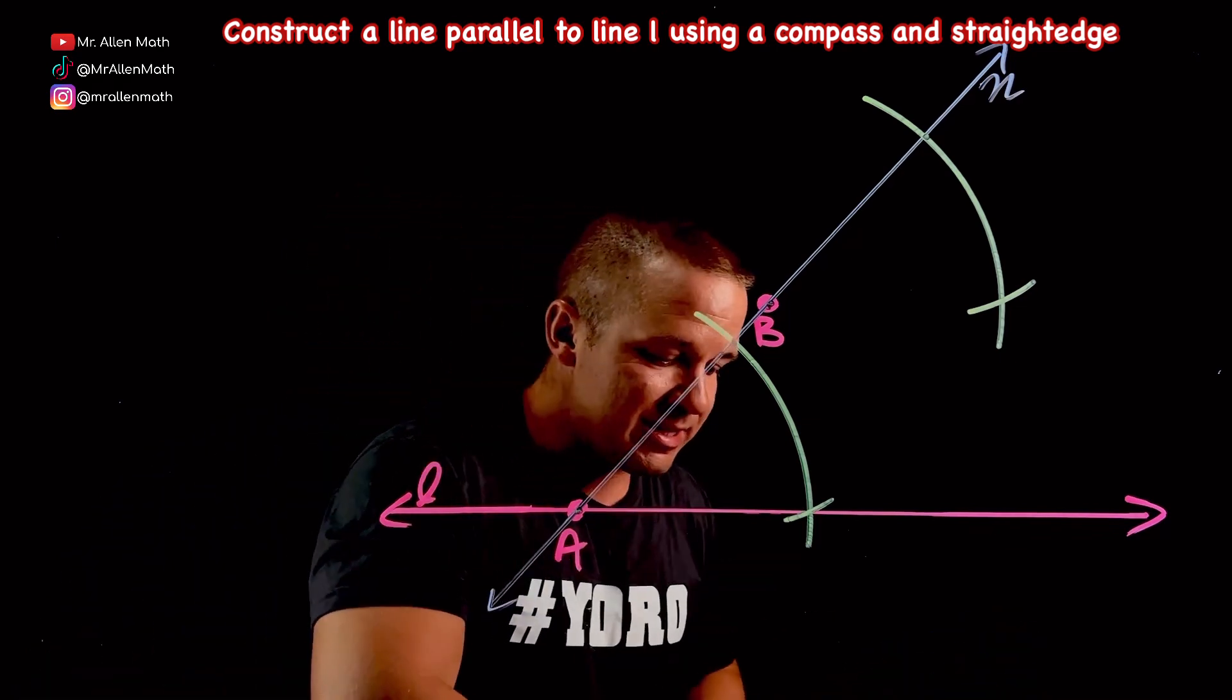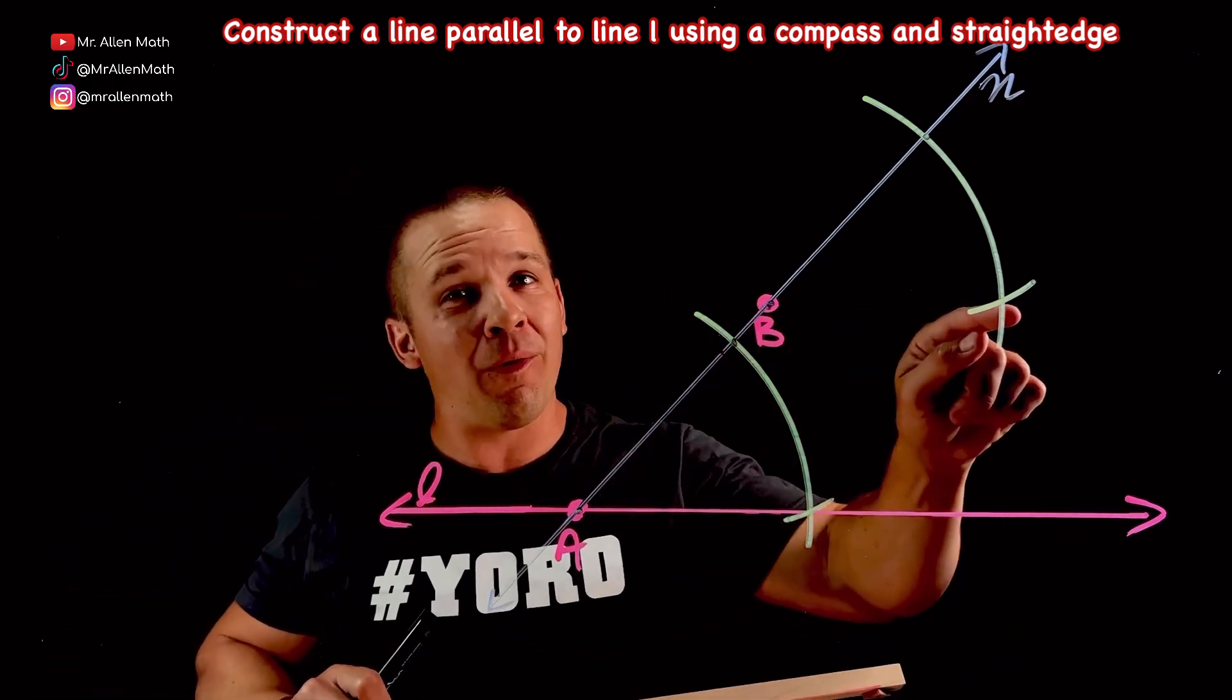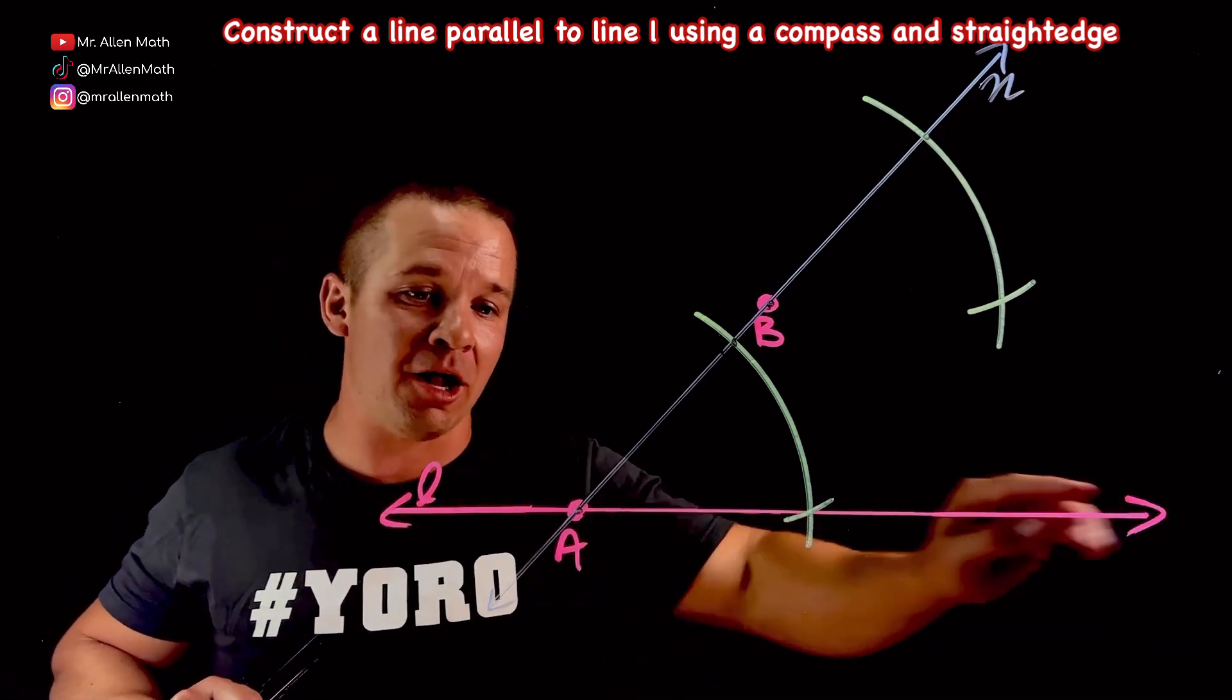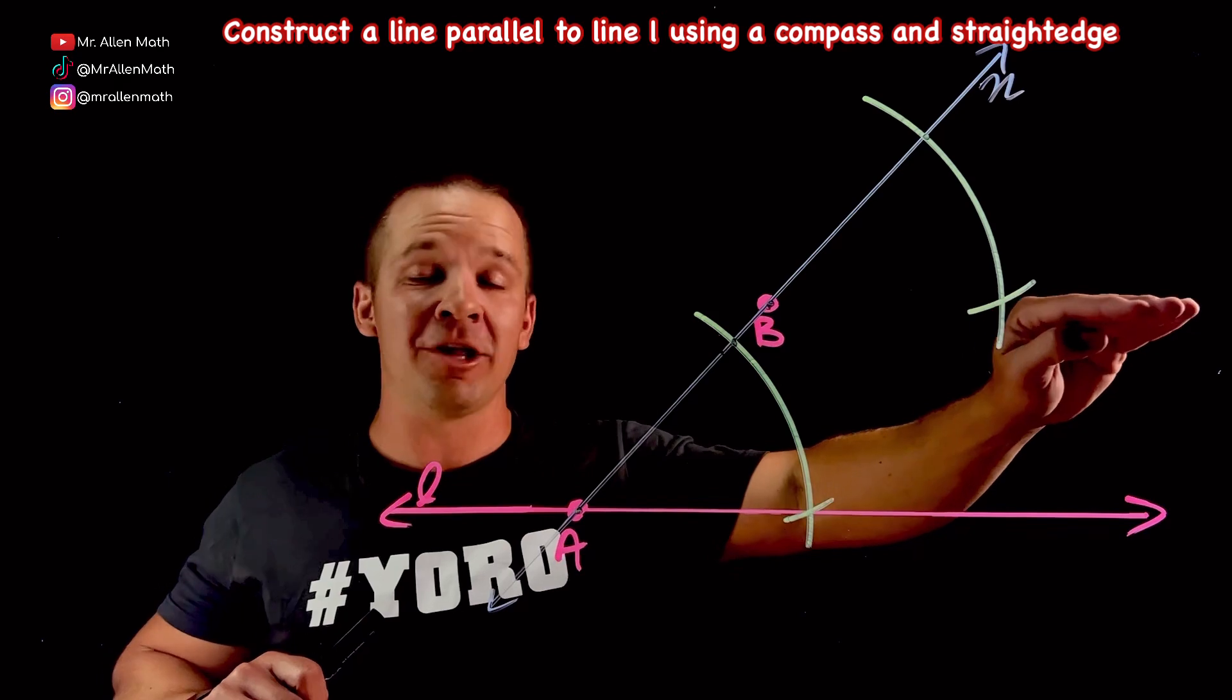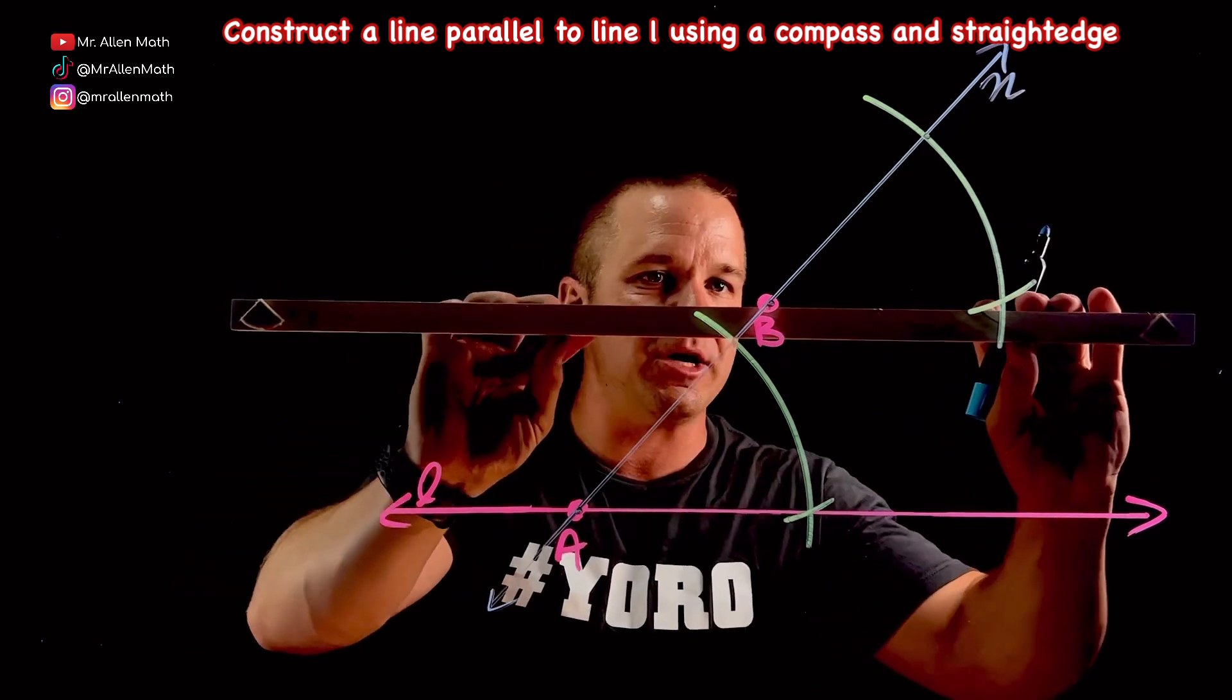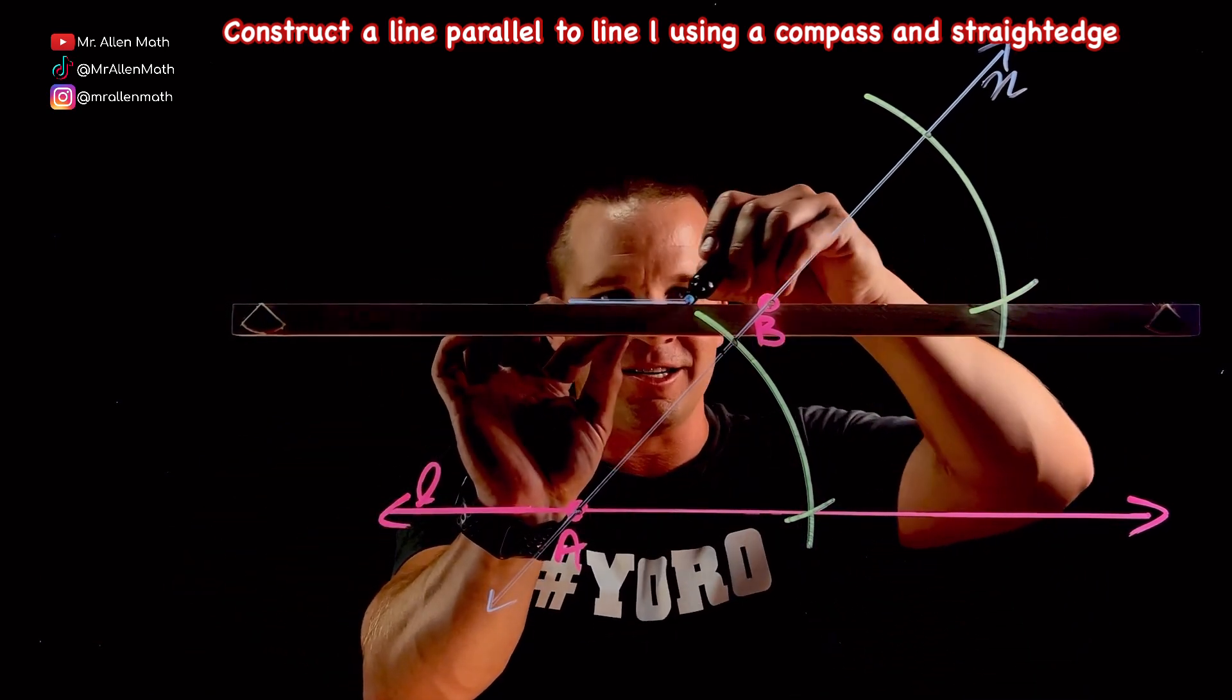Check this out. Now, I can take my straight edge, and if I connect B and this new point, I should get a line that is parallel to line L down here because this new point here lies on line L along with A. So this new point here should lie on a line that is parallel to line L through B and that one. I should probably uncap this thing first.